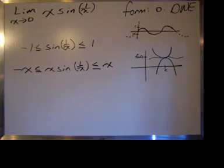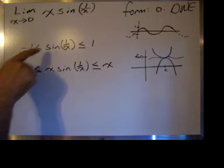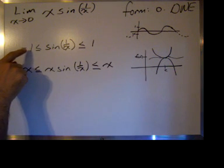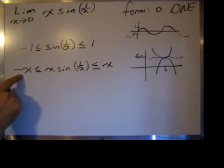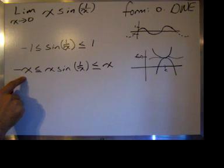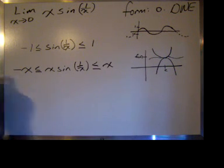Now we have what we're looking for. Since sine of 1 over x is between negative 1 and 1, then multiplying through everything by x will not change this inequality. It still stays true.